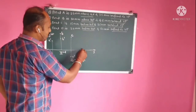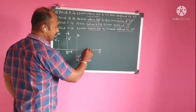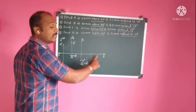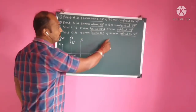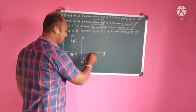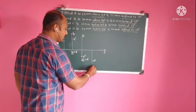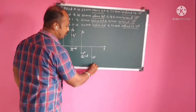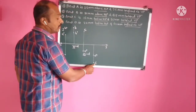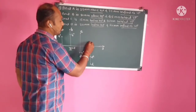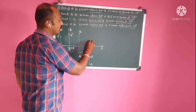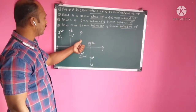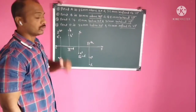Remember, always take distances from the XY line only. From XY line, plot 40 mm below — that is the top view of point D. So this point lies in the fourth quadrant. We have now covered all four quadrants: first, second, third, and fourth.